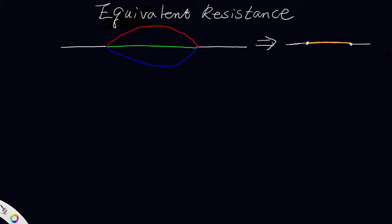Now let's look at how we use the calculation of equivalent resistance for airways in parallel. As you can see, there are three airways in parallel: one on top (the red airway), one green airway, and one blue airway. The total quantity coming in is Q. The resistance for the top airway is R1 with quantity Q1, the middle airway is R2 with Q2, and the bottom airway is R3 with Q3. How do we reduce these to an equivalent airway with resistance R-equivalent and total flow Q?